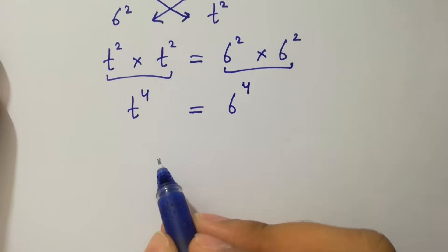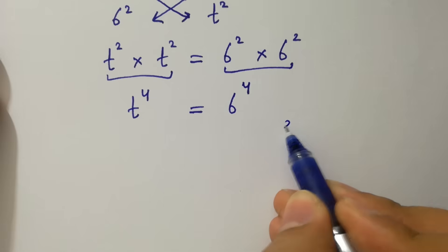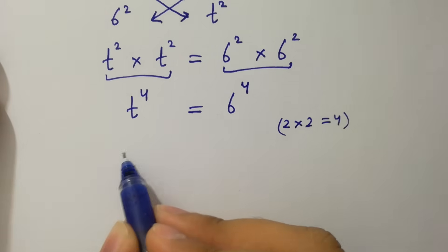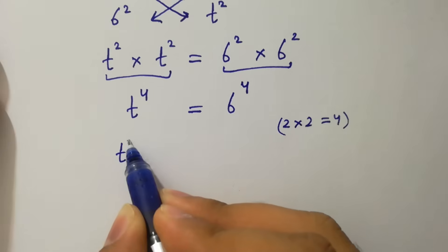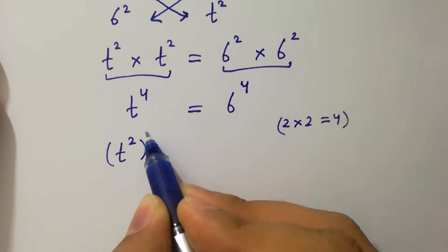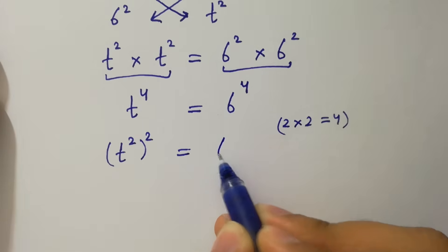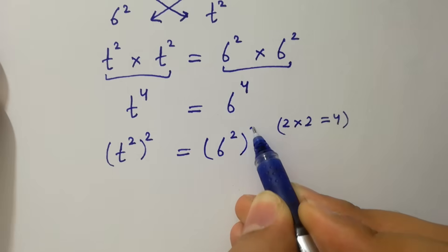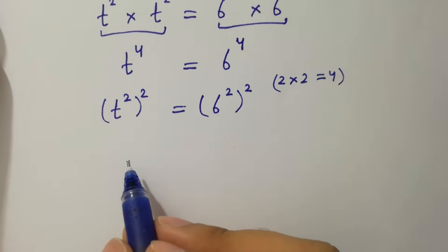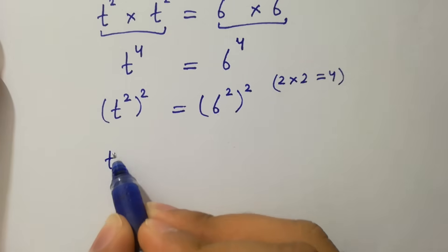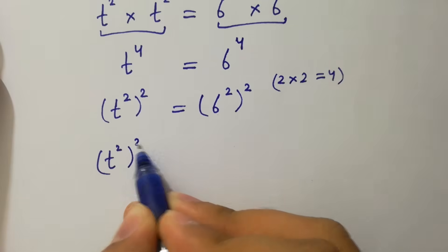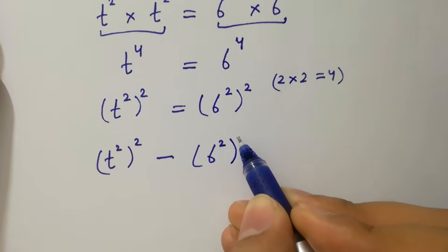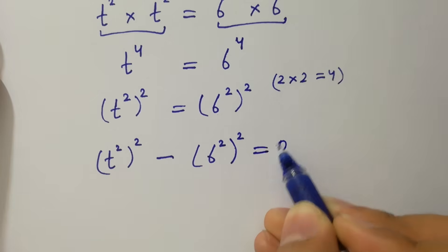As 2 times 2 is 4, we can write it as t to the power 2 to the whole power 2 equal to 6 to the power 2 to the whole power 2. So it can be written as t square to the whole power 2 minus 6 square to the whole power 2 equal to 0.